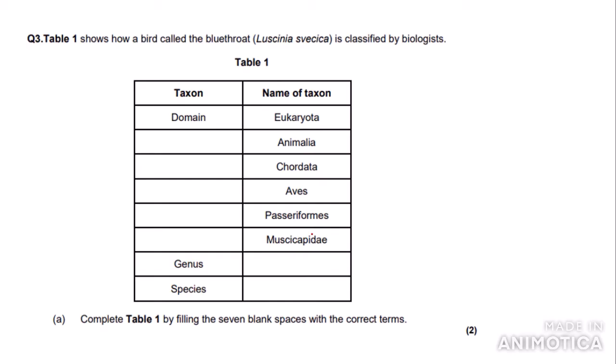Right, that is it for the content, and now I'm going to get on to some exam-style questions. So this first question shows how a bird called the blue-throat — I'm not going to try and pronounce the scientific name — is classified by biologists. Here we have a table with some gaps missing. The question says: complete Table 1 by filling the seven blank spaces with the correct terms. This requires knowledge from the species and taxonomy section, which I've already made a video on.